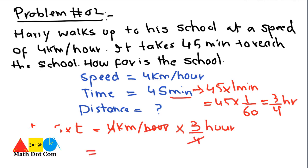We will replace the time with 3/4 hour. The hours cancel out, and the distance comes out to 3 km. As the speed was in kilometers per hour, the distance must be in kilometers, not meters. We can convert kilometers to meters by multiplying by 1000, giving 3000 meters.